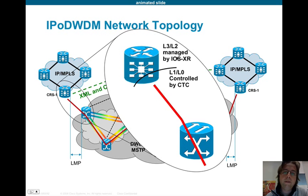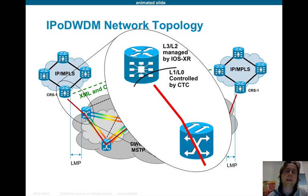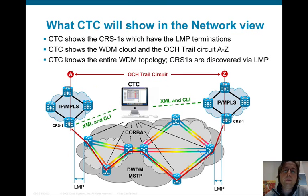Having virtual transponder in action, we can basically control the layer-1 section of the router — represented in IOS XR by the controller DWDM interface — from the CTC standpoint, while configuration of the upper layers, in particular layer 3, will still be done using CLI. CTC will be able to represent the router on the network map and show the router that has the LMP termination.